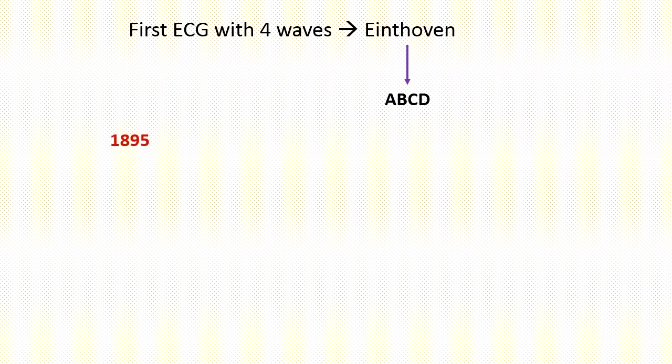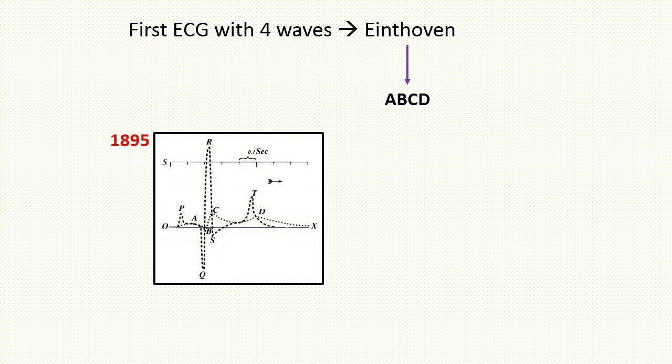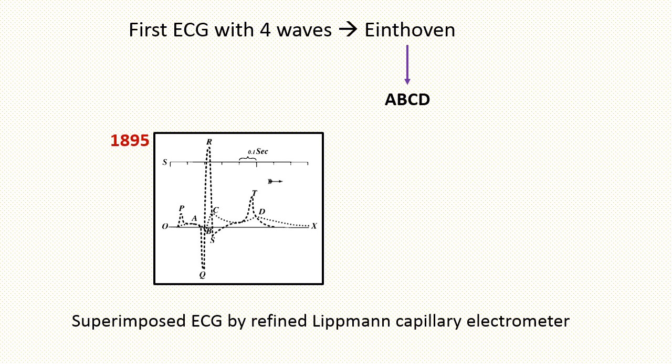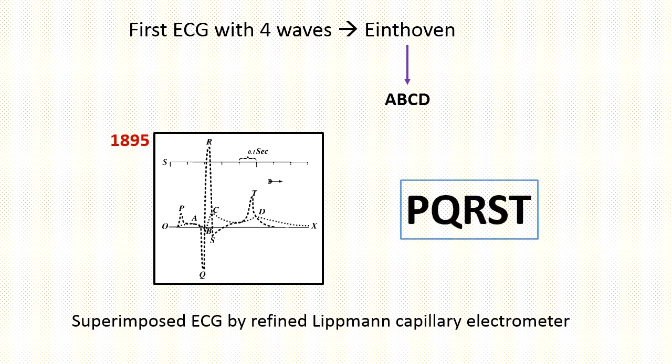In 1895, he published an illustration that showed his mathematically corrected curve superimposed on the uncorrected curve made by a refined electrometer. Because he used A, B, C, D to indicate the waves in the uncorrected tracings, he was forced to find other letters to label his corrected curves which he superimposed on the uncorrected tracing. So he chose P, Q, R, S, T.